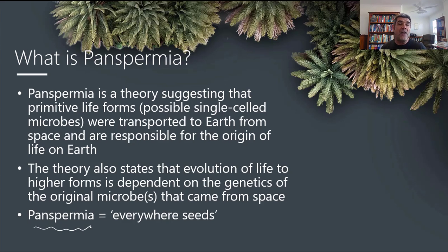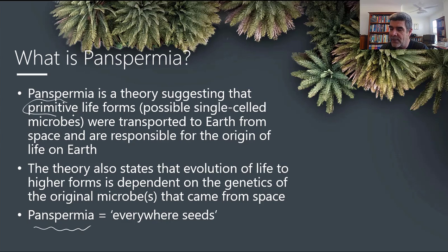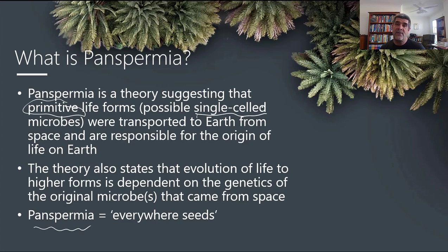Meteorites are parts of other objects in space that have made their way through our atmosphere and collided with the Earth at some time in the past, leaving behind some evidence of primitive life. We're focusing on the fact that it wouldn't have been complex life — more likely something very simple, like single-celled microorganisms. They'd have to survive the cold and lack of atmosphere of space as they traveled to Earth.